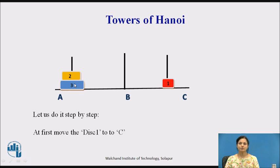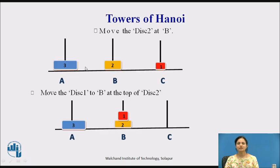So for that we need an algorithm. In the case of three disks, first we move disk 1 to C, then move disk 2 to B. Then disk 1 is moved from C to B, on top of disk 2. Then disk 3 can be moved to C.